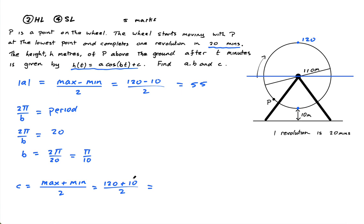And then divide by 2. Yeah, sorry, the max plus the min. So the maximum is 110. 120 plus 10 is 130. Divide by 2 is 65. So C is 65.